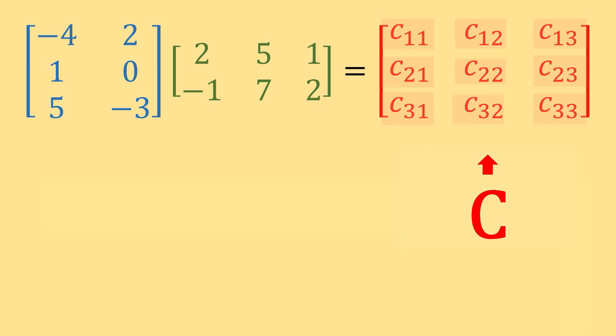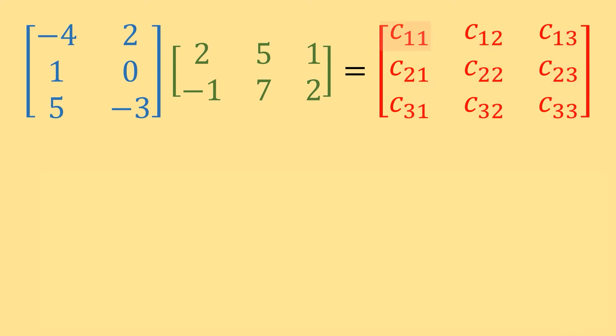The placeholder C values in the result matrix use index notation where the subscript numbers tell us the position. For example, C11 is the value in row one, column one of matrix C. The first index tells us the row from the left matrix to use, and the second index tells us the column from the right matrix to use. So C23 represents the value in row two, column three of matrix C.